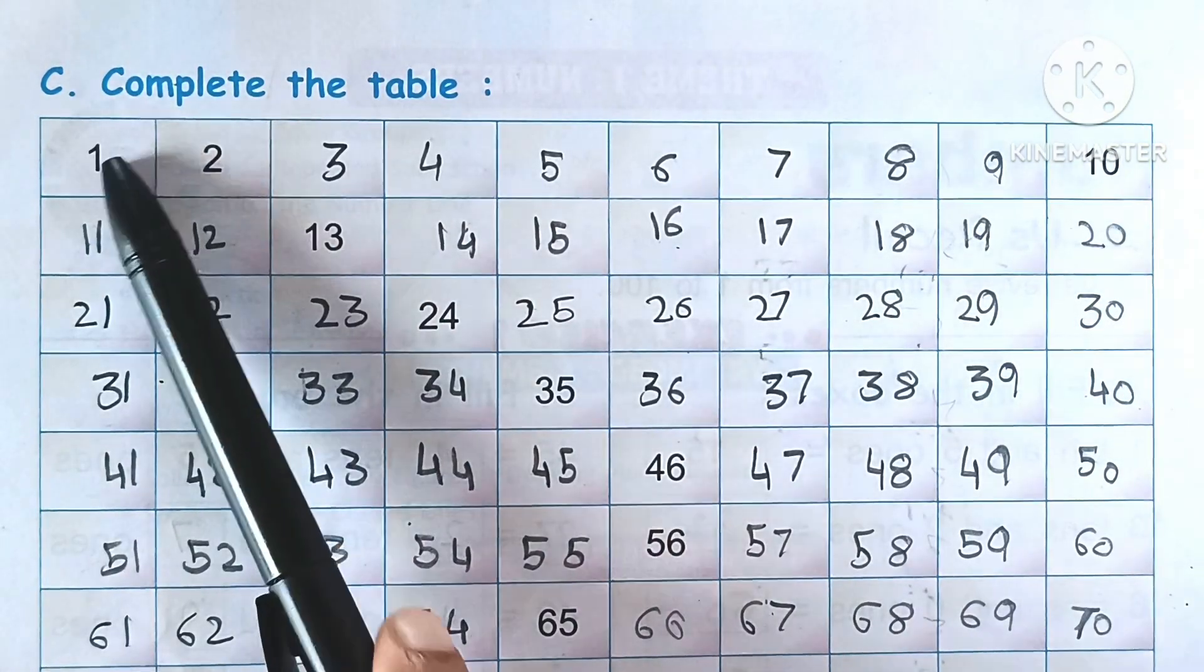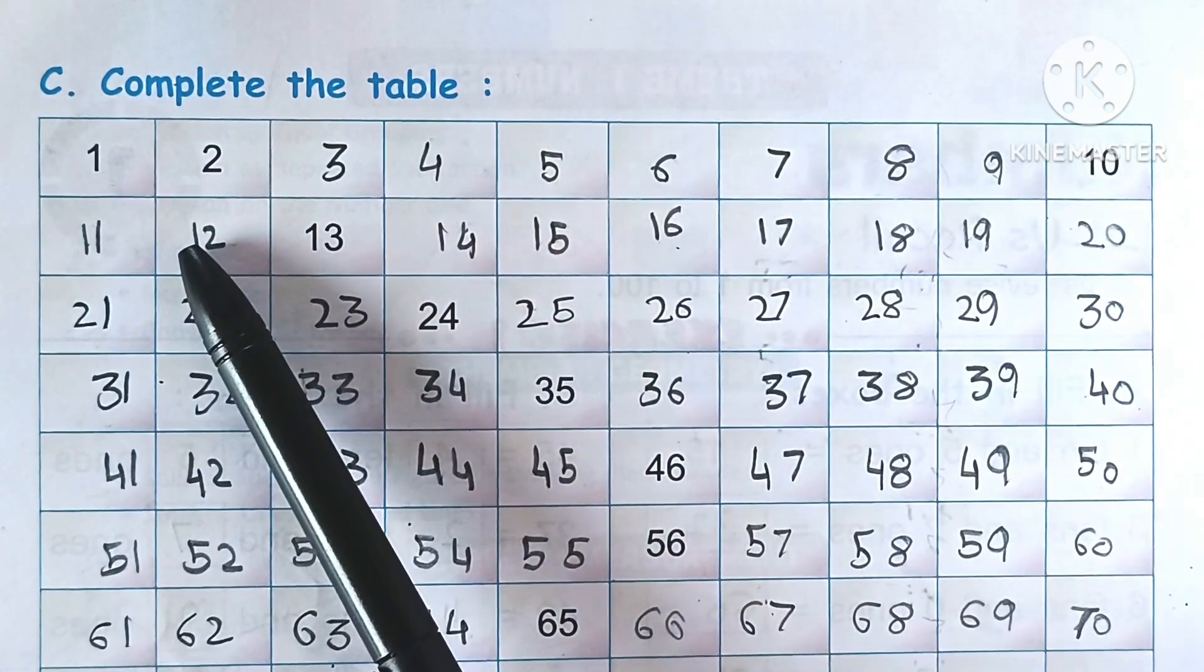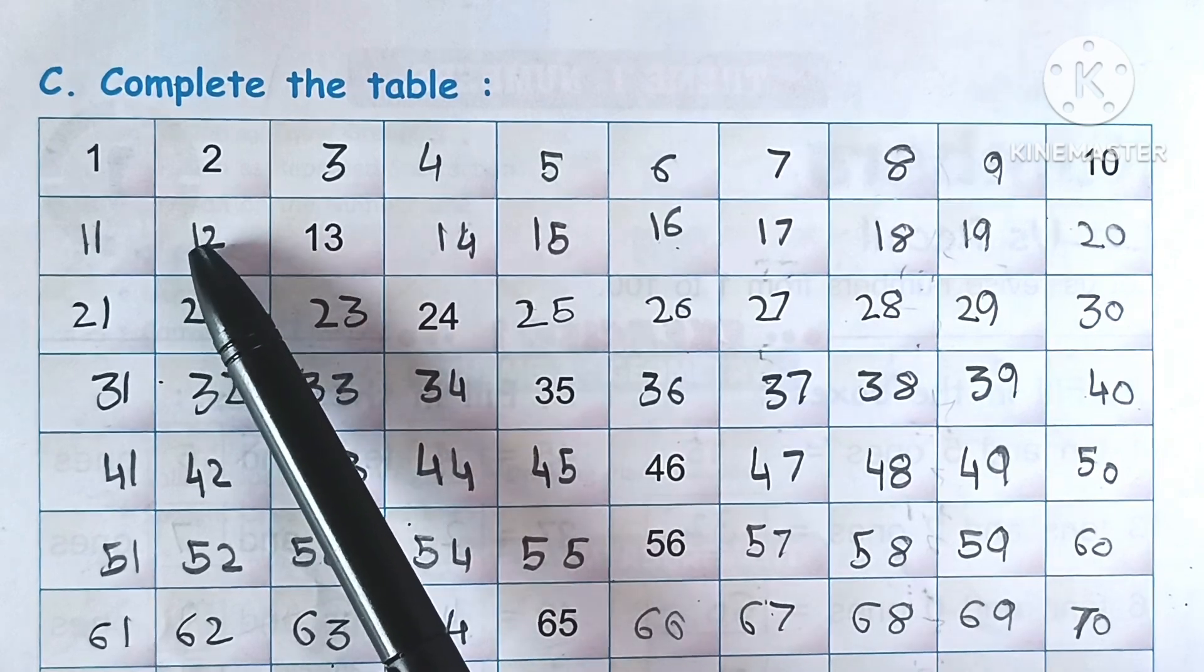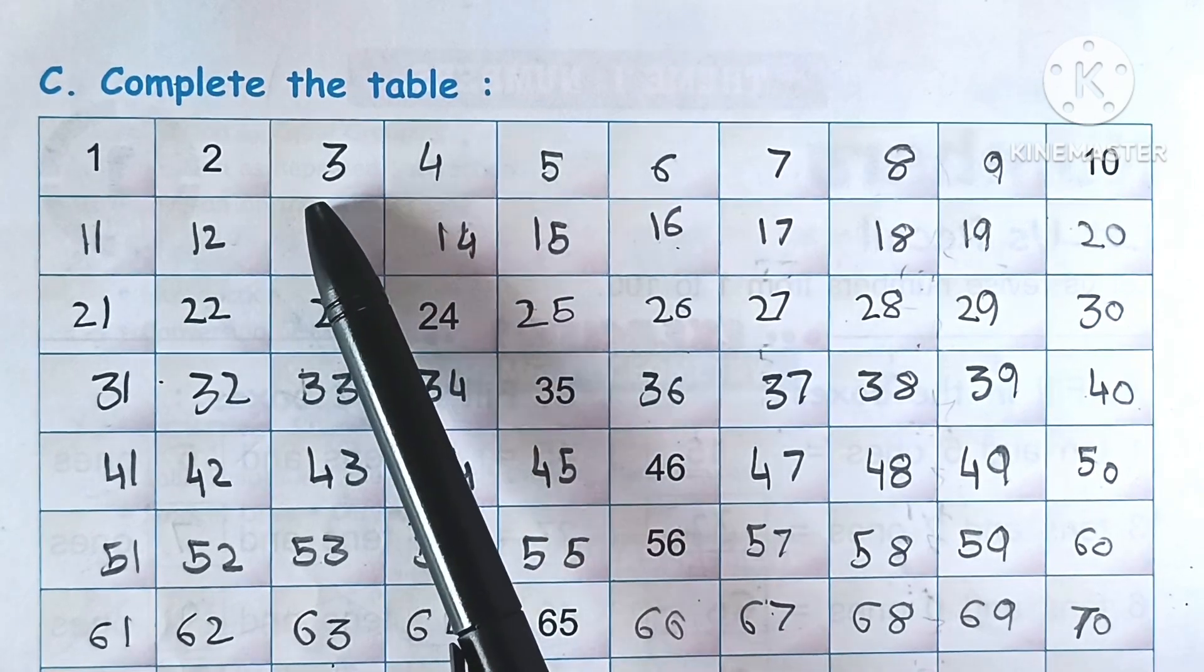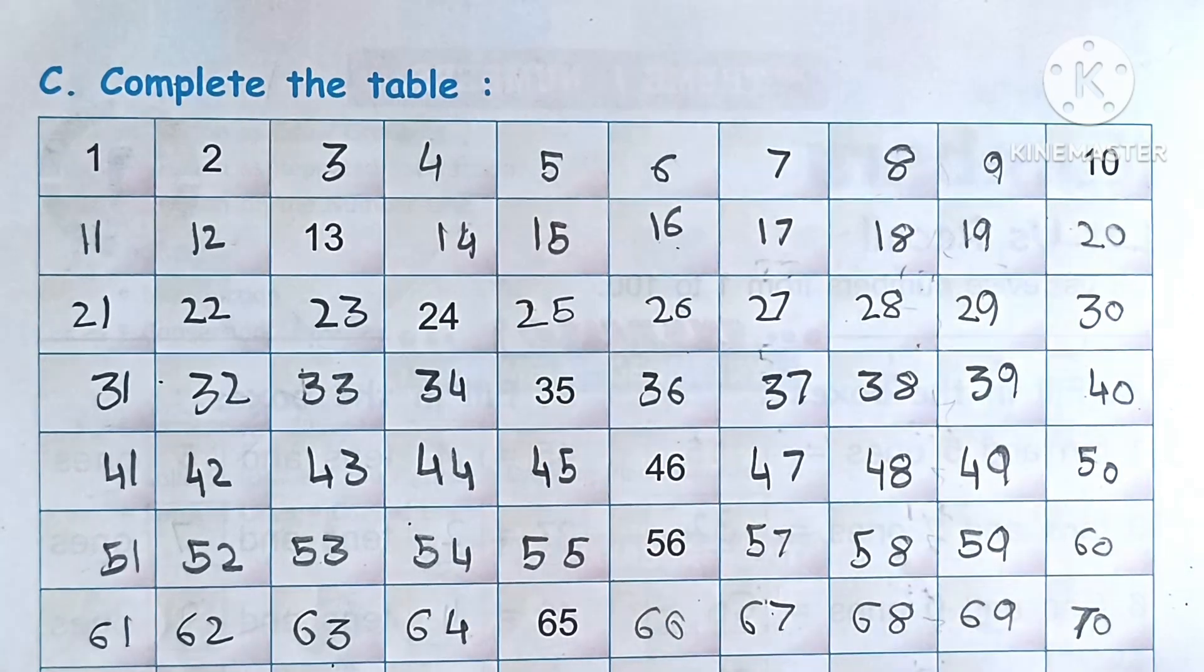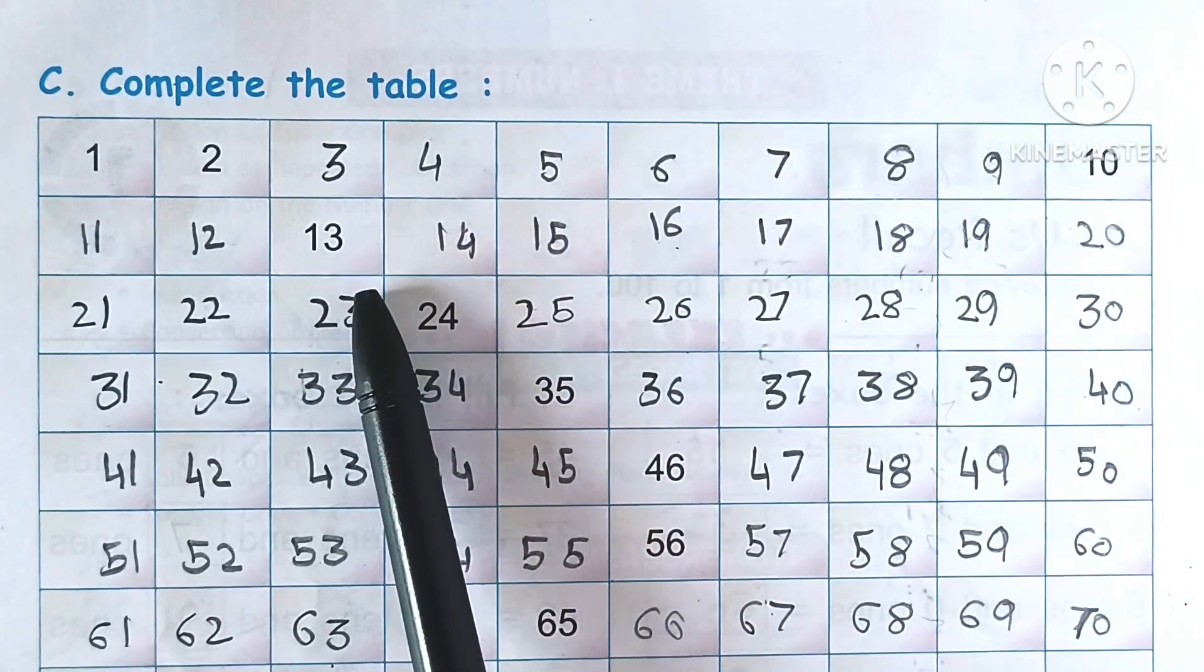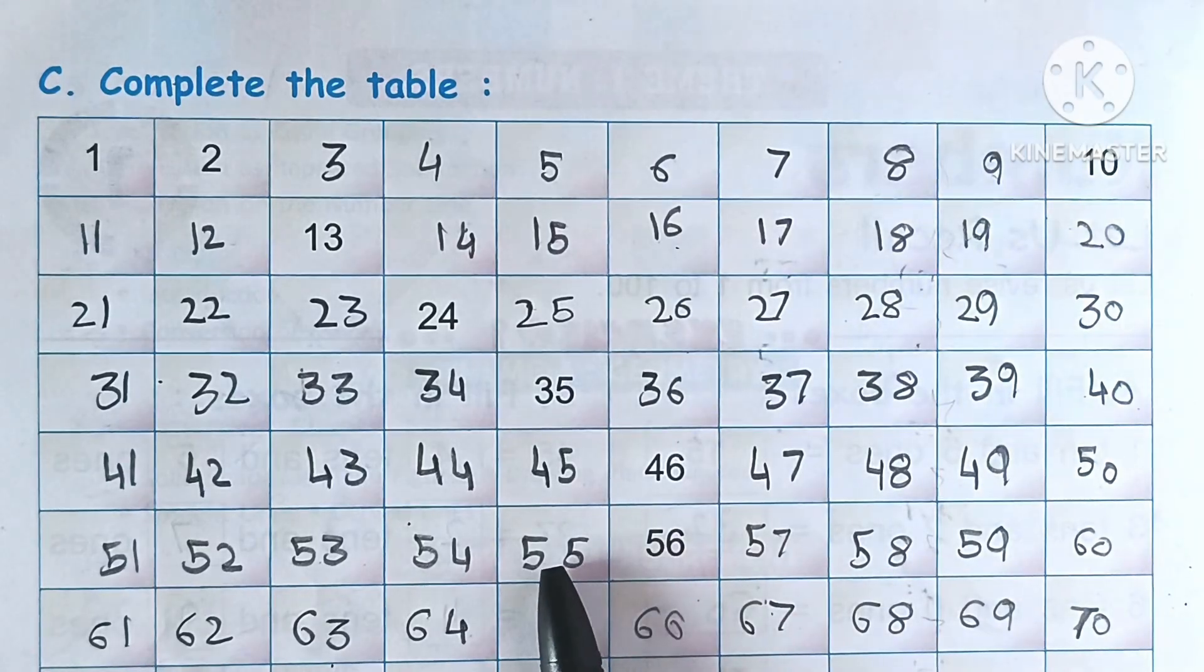Question C: complete the table. Students, here you can count one to hundred and then you can easily solve it. You can see numbers one to hundred written, which numbers you can see and the rest of the numbers you can fill in.